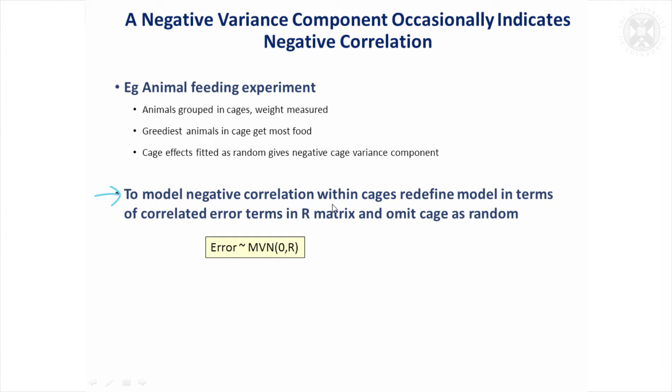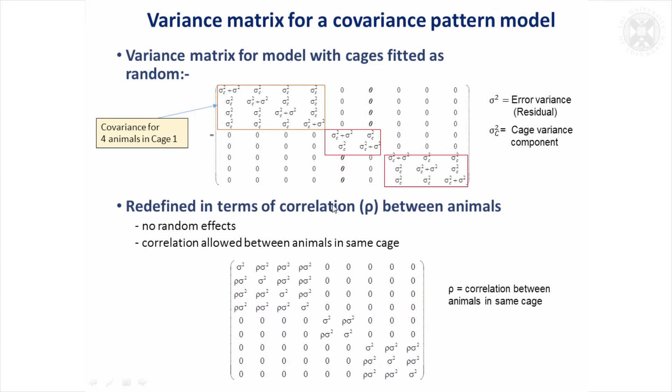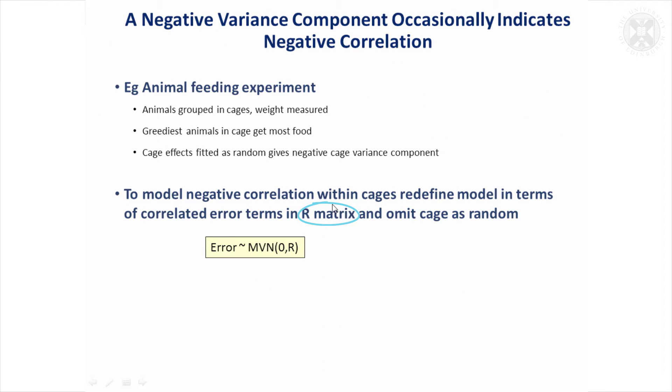Instead of having a random effect, we would just have this multivariate normal distribution for our error terms. Just to bring that to life a bit, if we fitted cage effects as random, and here say we've got four animals in the first cage, two in the second cage, three in the third cage, then this is what that R matrix here would look like.